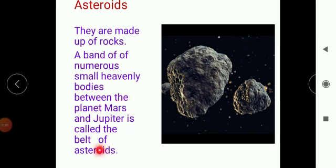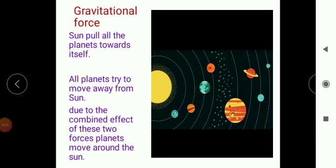A band of numerous small heavenly bodies between the planets Mars and Jupiter is called the belt of asteroids. As you can see in this slide, the belt of asteroids is very clear and prominent between the planets Mars and Jupiter. So basically, a band of heavenly bodies between Mars and Jupiter is called the belt of asteroids.